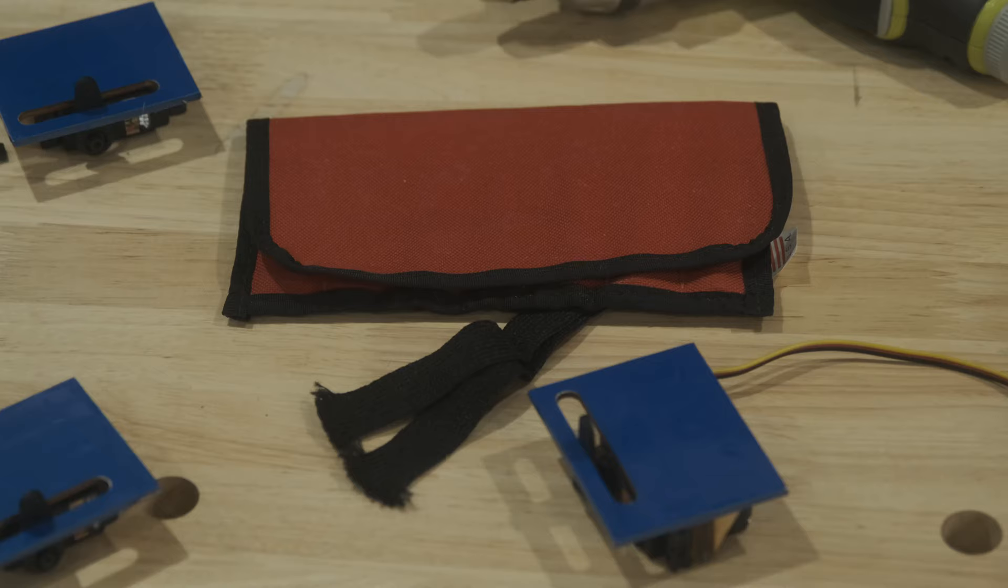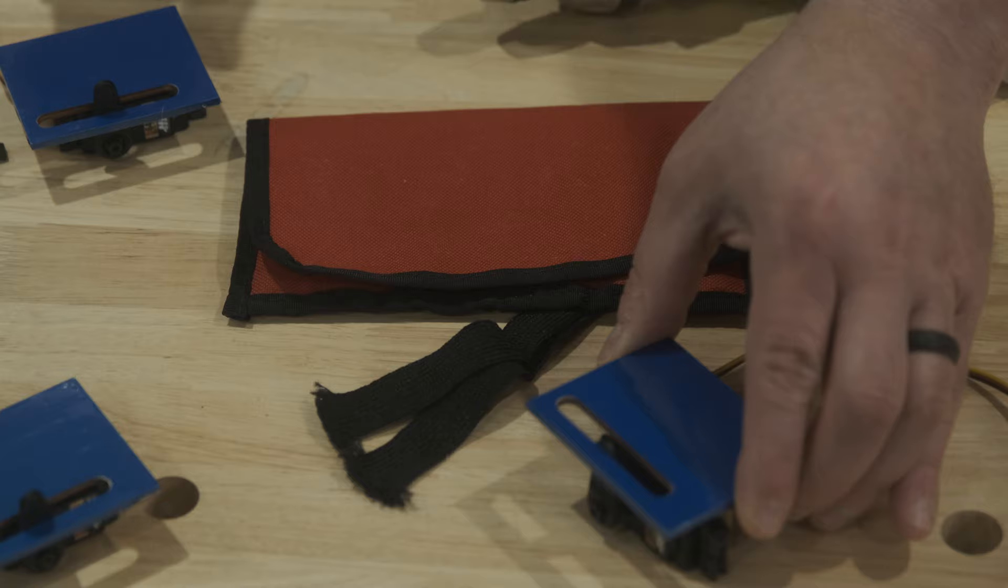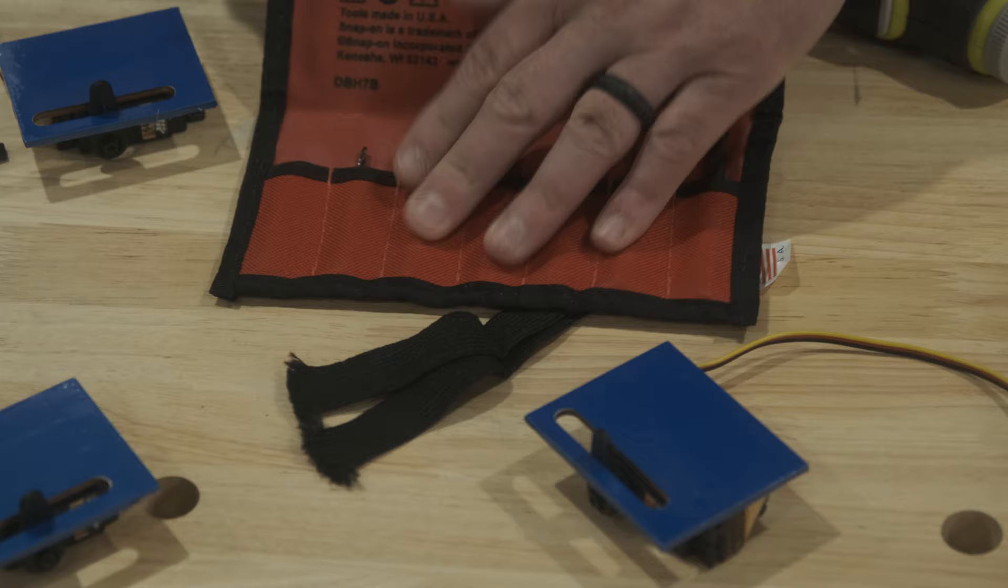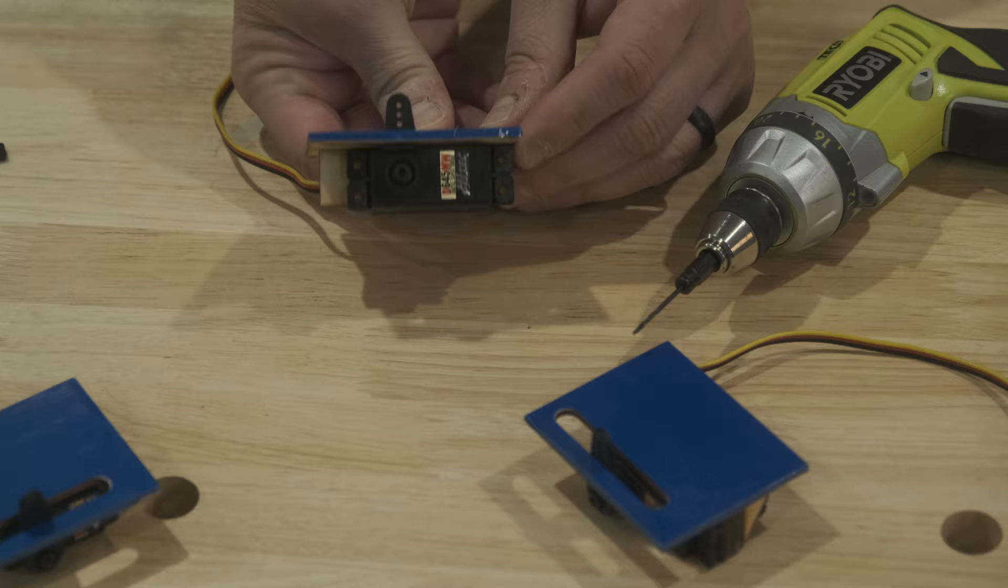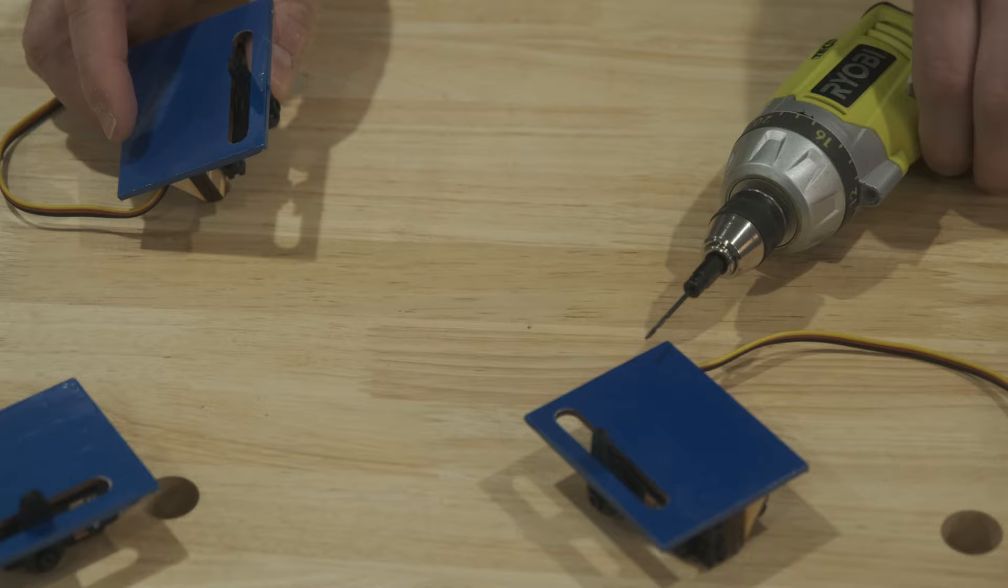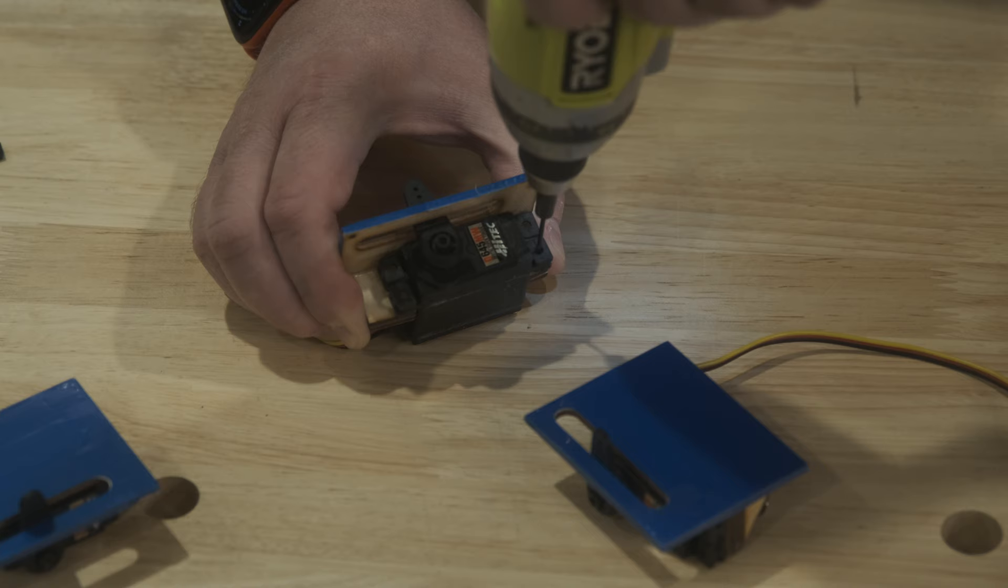All right, time to mount the servos. We got our servo pocket, let's get out some of our bits here and start drilling. There's a lot of drilling to be done. We're going to drill first to establish the threads with the servo screws and use some CA. We're drilling the pilot holes.